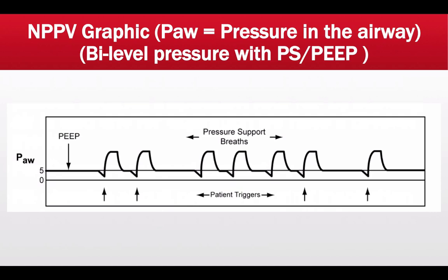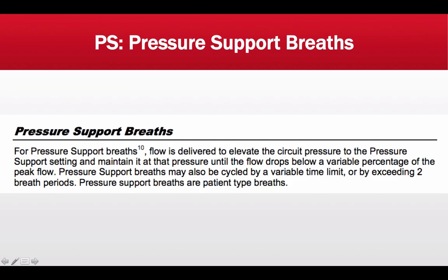Pressure support assists patients not only in augmenting their tidal volume but also with the work of breathing and with eliminating carbon dioxide. Here is a graphic representation of BiPAP on the waveform. PAW is set at 5 centimeters of water — so during exhalation the patient receives 5 cm PEEP or CPAP. During inhalation triggered by negative inspiratory force, the ventilator delivers pressure support ventilation for every patient-triggered breath, with the pressure support level set by the clinician on the pressure support dial.